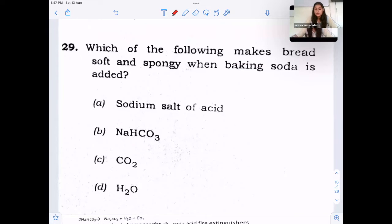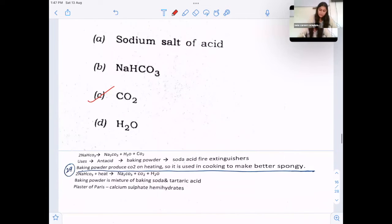Next question, which of the following makes bread soft and spongy when baking soda is added? Don't be tempted to mark baking soda as answer. Yes, it's already given that baking soda is added. So the gas which is responsible for a spongy batter is CO2. CO2 is produced by baking soda which makes batter spongy. CO2 is the answer. So here it is given.